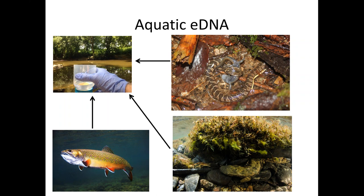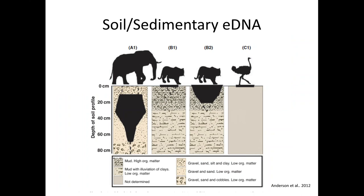I'll also briefly mention getting eDNA not from water but from soil or sediment — this is something a lot of people ask about, and it's especially relevant for herps that spend a lot of time on the ground. One of the first studies looking at terrestrial vertebrates getting soil eDNA was from a game park in Europe — detecting elephants, tigers, and ostrich. I'll talk more about this in a herp context later in the talk, but it's another emerging direction for eDNA.